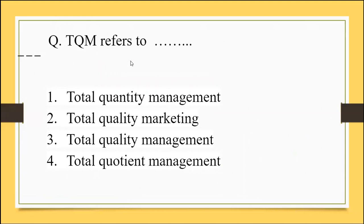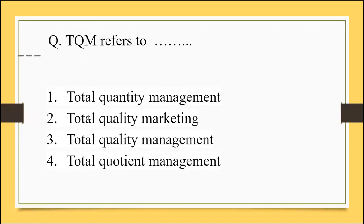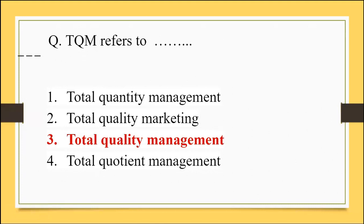Question: TQM refers to — options: 1) Total Quality Management, 2) Total Quality Marketing, 3) Total Quality Management, 4) Total Quotient Management. While reading, there may be confusion between options 1 and 3 which both say the same thing. T stands for Total, Q stands for Quality — so eliminate options with quotient. M stands for Management. We are going to lock option number 3 as the correct option: Total Quality Management.